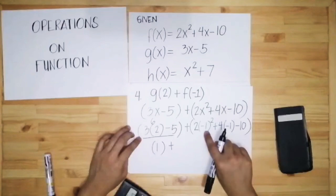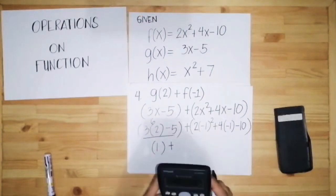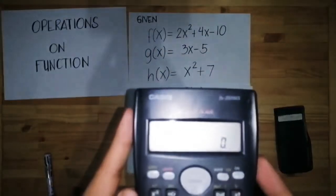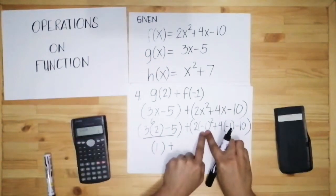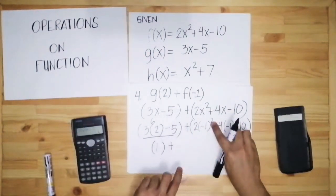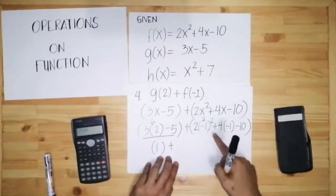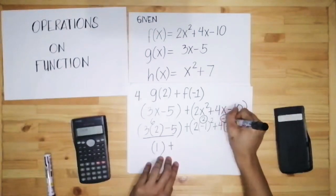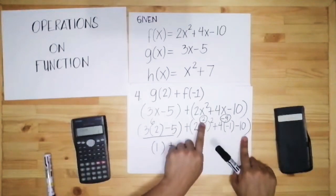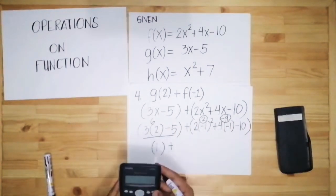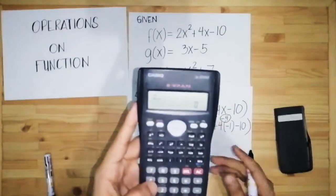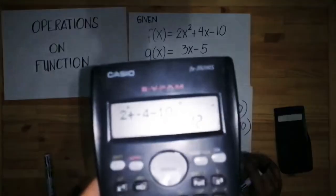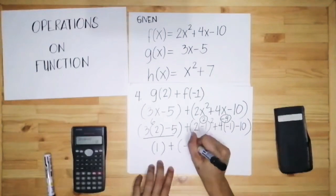Now for the second parenthesis: negative 1 raised to 2 equals positive 1. So 2 times 1 equals 2. Then 4 times negative 1 is negative 4. Then we have negative 10. Combining: 2 plus negative 4 plus negative 10 equals negative 12. So the value of the second parenthesis is negative 12.